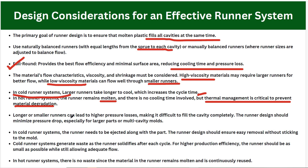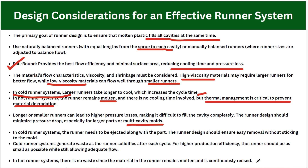Longer or smaller runners can lead to higher pressure losses, making it difficult to fill the cavity completely. The runner design should minimize pressure drop, especially for large parts or multi-cavity molds. In cold runner systems the runner needs to be ejected along with the part, so the design should ensure easy removal without sticking to the mold. Cold runner systems generate waste as the runner solidifies after each cycle, so for production efficiency the runner should be as small as possible while still allowing adequate flow. In hot runner systems there is no wastage since the material remains molten and is continuously reused.